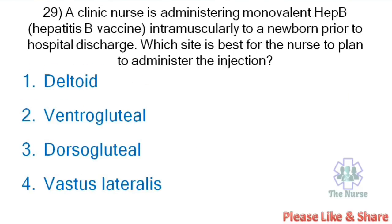Next question: A clinic nurse is administering monovalent hepatitis B vaccine intramuscularly to a newborn prior to hospital discharge. Which site is best for the nurse to plan to administer the injection? Options: Deltoid, ventrogluteal, dorsogluteal, vastus lateralis. For a newborn baby, the vastus lateralis is the site of IM injection.